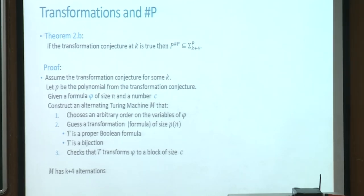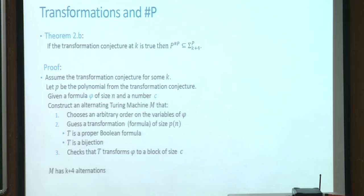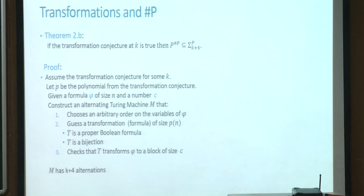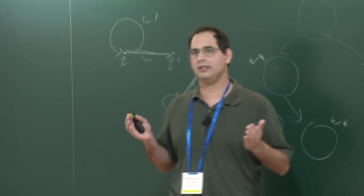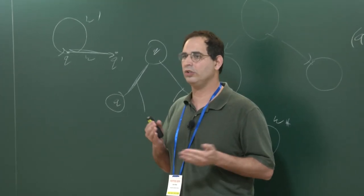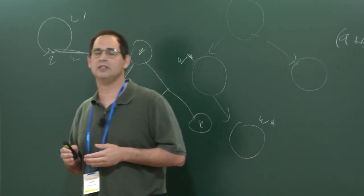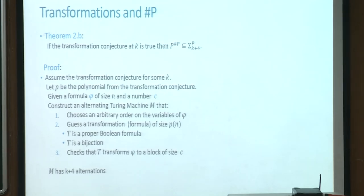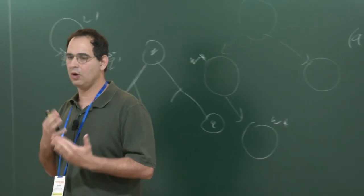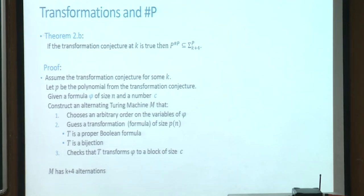Conversely, if the transformation conjecture at K is true, then we can collapse P^{#P} to Sigma_{K+4}^P — so there is a gap between K and K+4 that we still need to close. The idea is: given a formula P and a number C, we want to decide whether the number of solutions is bigger or smaller than C. We construct a Turing machine that guesses the transformation (which is polynomial in size), then verifies that it is a valid Boolean formula, that it is a bijection, and that it transforms P into a block of size C. Because of the four verification steps, the machine ends up with K+4 alternations.